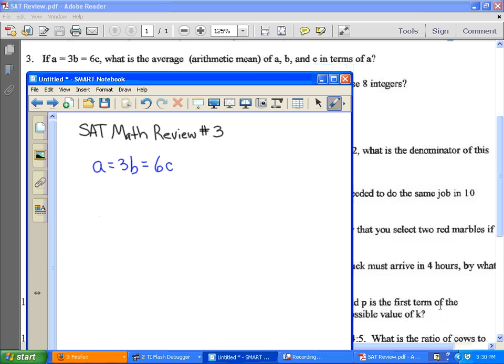Well, the average or the arithmetic mean of A, B, and C is going to be the sum of A plus B plus C divided by 3.